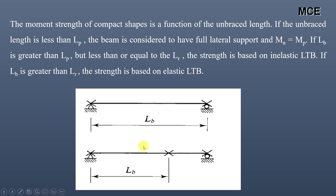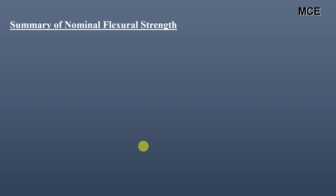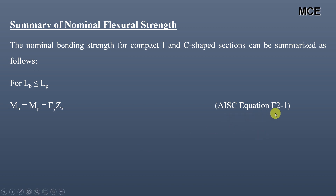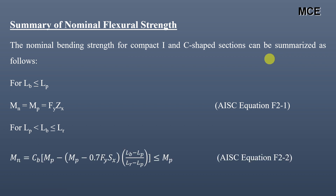A figure shows the actual unbraced length of a beam for two different cases. For the nominal flexural strength summary per AISC for I and C shaped sections: if LB ≤ LP, then MN = MP = FY × ZX, where FY is the yield stress and ZX is the plastic section modulus — this is AISC equation F2-1. If LB is greater than LP but less than or equal to LR, the nominal moment strength is given by AISC equation F2-2, which must be less than or equal to MP.